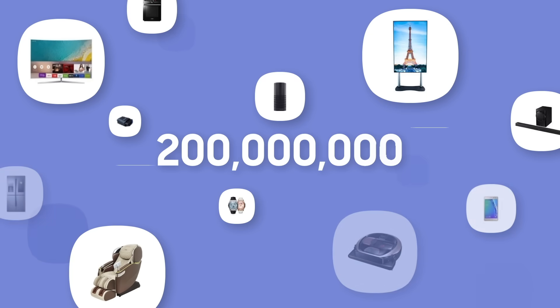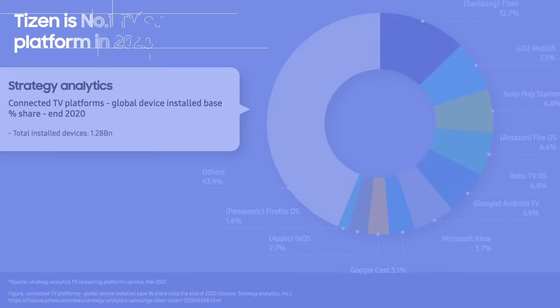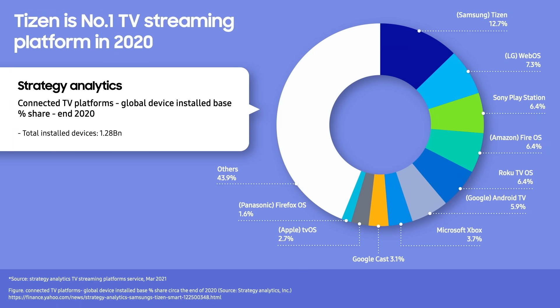I would like you to think of a number in your mind: 200 million. Can you take a wild guess what this number means? It is the number of Tizen devices all across the world. According to a report from Strategy Analytics, Tizen is the largest streaming platform in 2020.